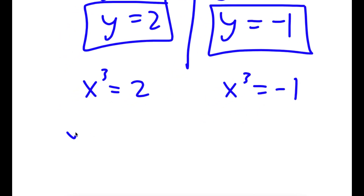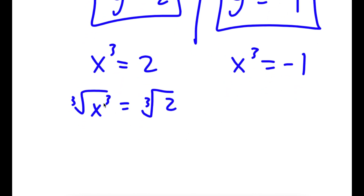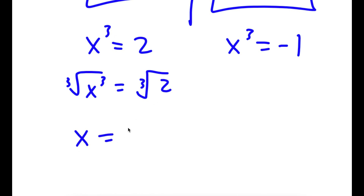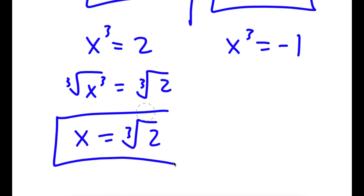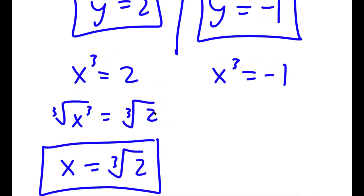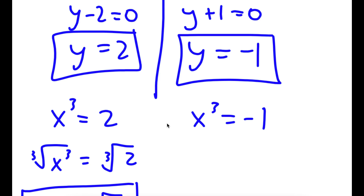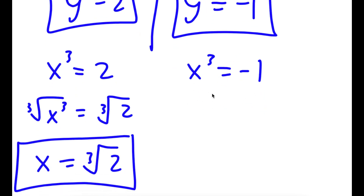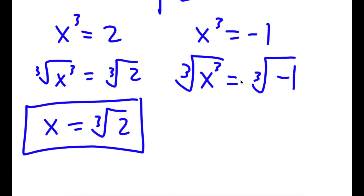Remembering that x to the power of 3 equals y, I substitute back. For y equals 2: x to the power of 3 equals 2, so taking the cube root of both sides gives x equals the cube root of 2. For y equals negative 1: x to the power of 3 equals negative 1, and taking the cube root of both sides gives x equals negative 1, since the cube root of a negative number is still negative.